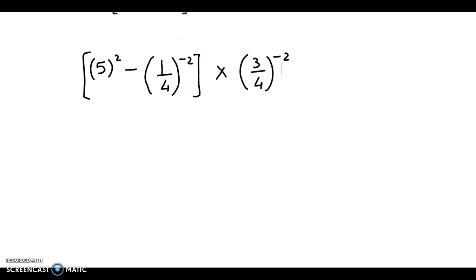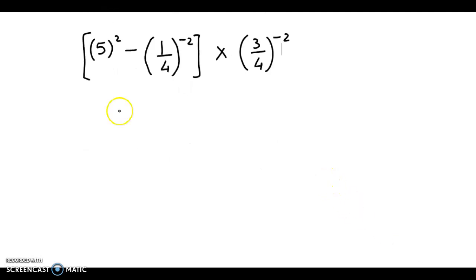Now we simplify this using the laws of indices. So 5 square is 25.